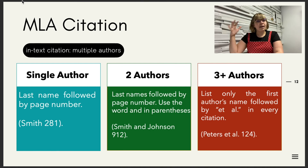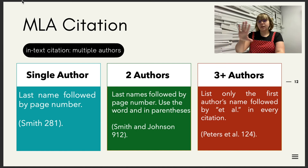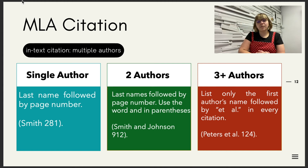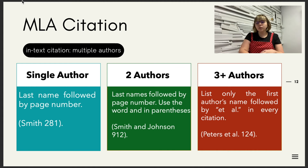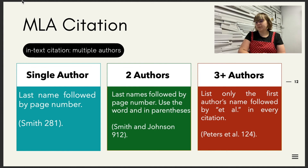If your source has multiple authors — more than two — you'll want to use 'et al.' For a single author: last name and page number. For two authors: two last names with 'and' in the middle, then the page number. For three or more authors: list the first author's last name, then 'et al.' — which is Latin for 'and others' — then the page number. That way you don't take up space listing 20 authors when you don't need to.